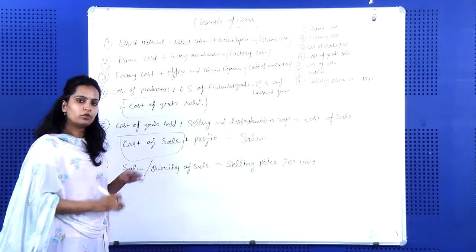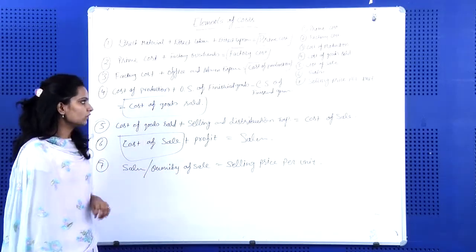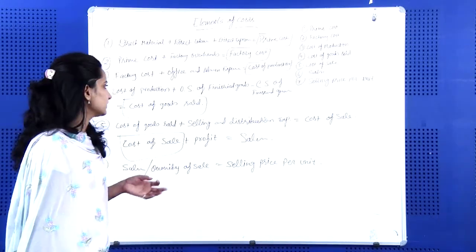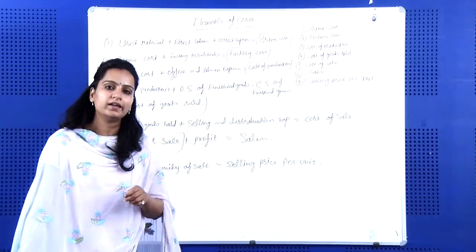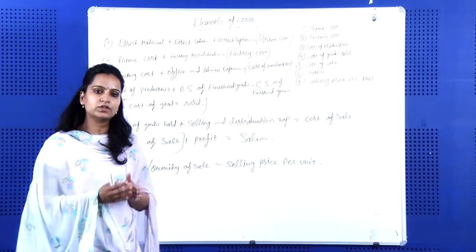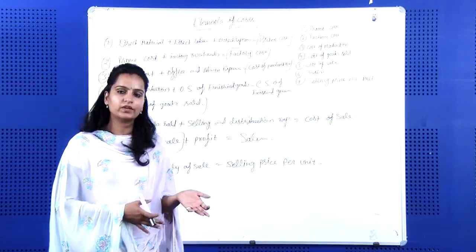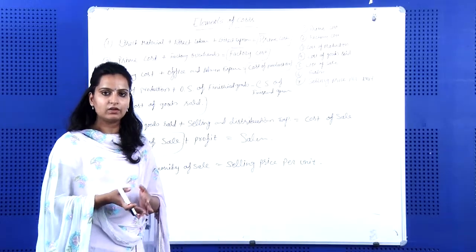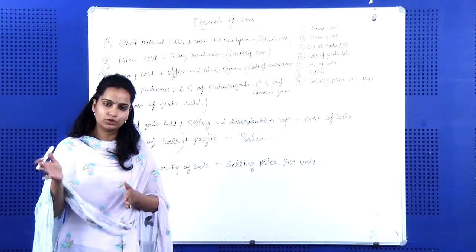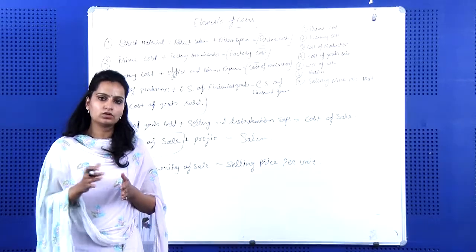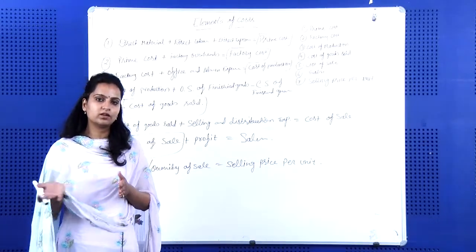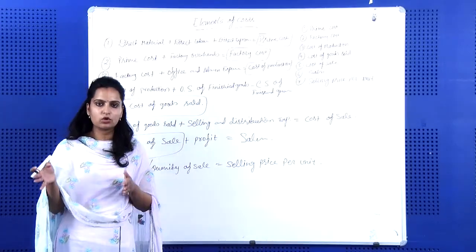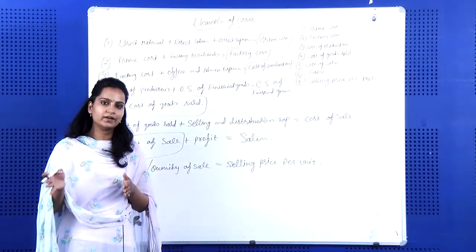This is the basic model for the elements of cost. Some terms used here are direct and indirect expenses. Direct expenses are expenses made directly to produce the product at the factory or production level. After production, some costs — overheads — are already included. Costs other than production cost are called indirect expenses.